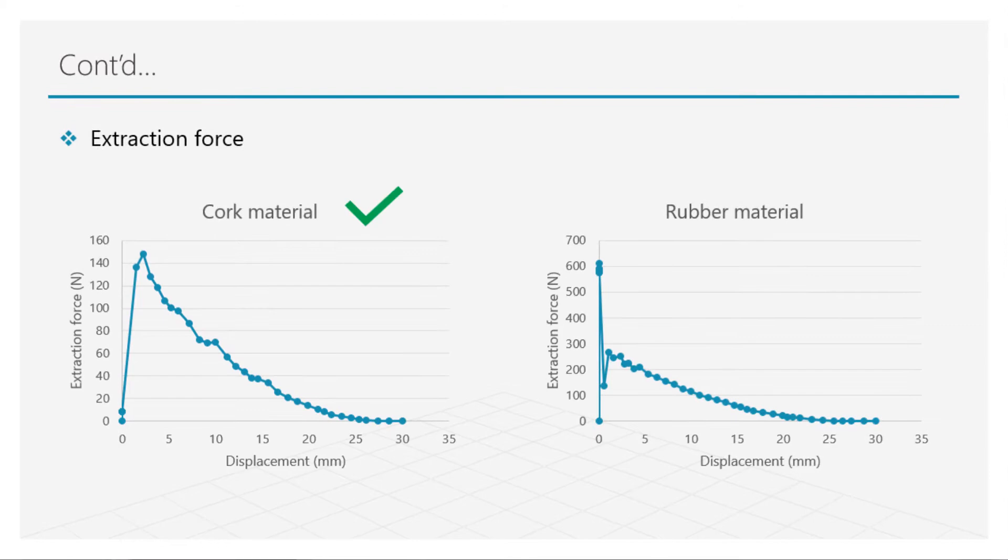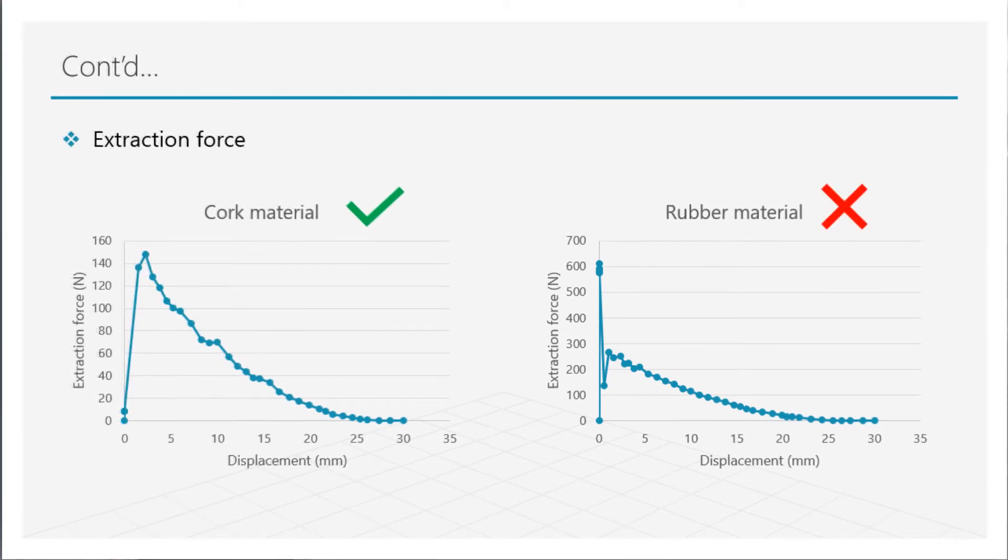Now the same quantity for the rubber material is almost as high as 600 newtons, which is more than the maximum limit of prescribed extraction force.